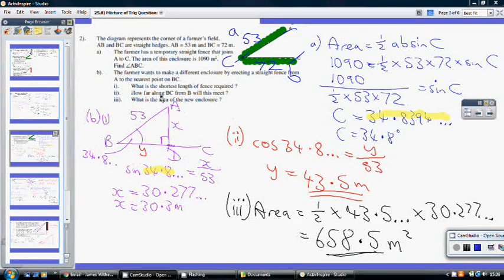Now, for B part 2, how far along BC from B will they meet? So, we're trying to work out this length from B to D. So, again, it's Sokotoa with this right angle triangle, and we're now wanting to work out the adjacent side. So, a cos 34.8394 equals Y over 53, my adjacent over my hypotenuse. Multiply both sides by 53, I get Y equaling 53 cos 34.8 dot dot dot, which is 43.5.